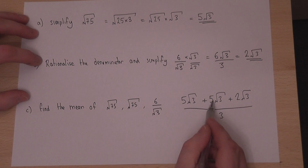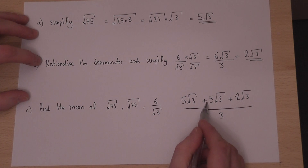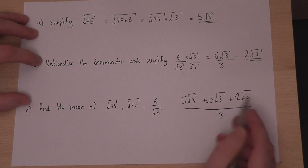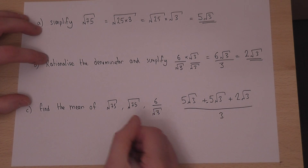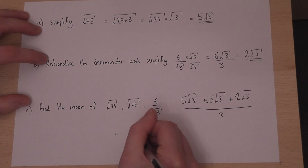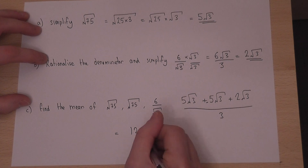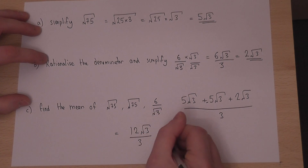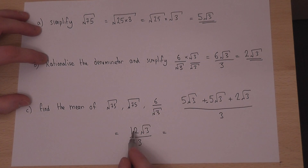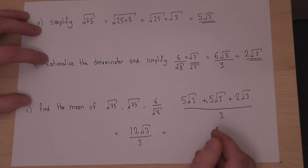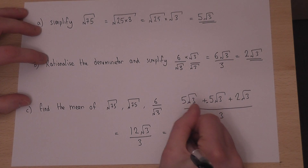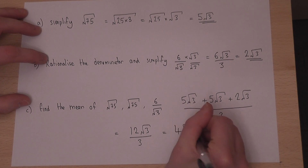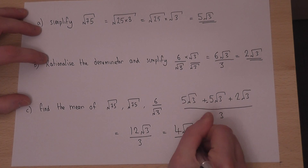5 plus 5 is 10, plus 2 is 12. So this equals 12 lots of root 3 all over 3, and 12 over 3 is 4. So the mean is 4 lots of root 3.